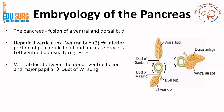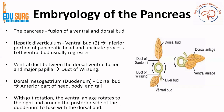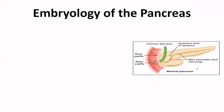The ventral duct between the dorsal-ventral fusion and the major papilla forms the duct of Wirsung. Coming to the dorsal bud — that is the dorsal mesogastrium, or the duodenum — the dorsal bud gives rise to the anterior part of the head, neck, body, and tail. So most of the pancreas is formed by the dorsal bud, as you can see here, whereas the ventral bud only forms the posterior part of the head and the uncinate process. As the gut rotates, the ventral bud rotates to the right around the posterior side of the duodenum to fuse with the dorsal bud.